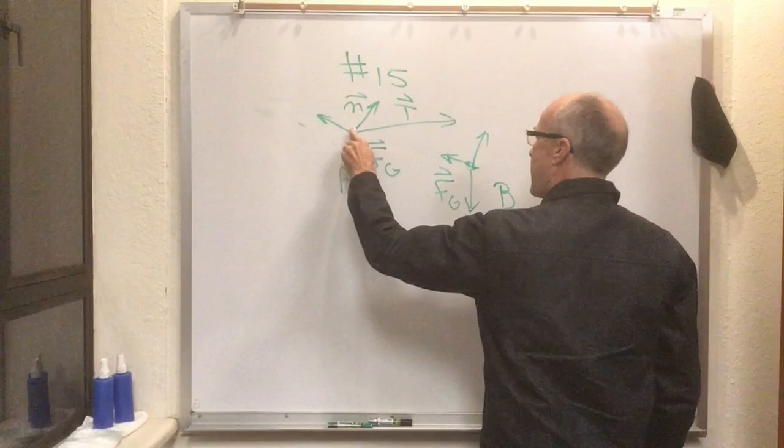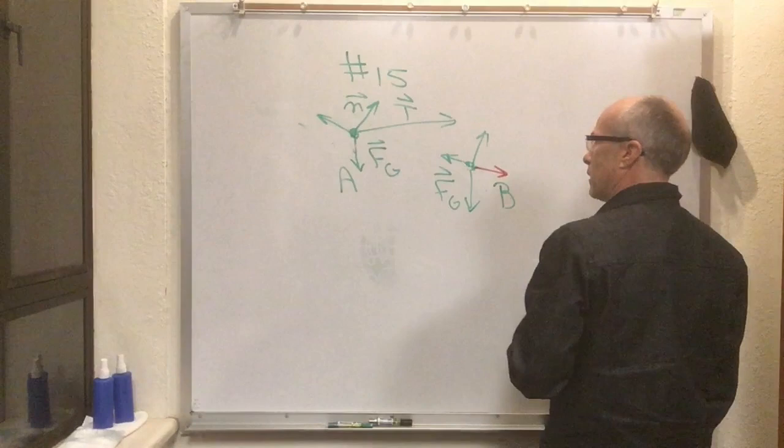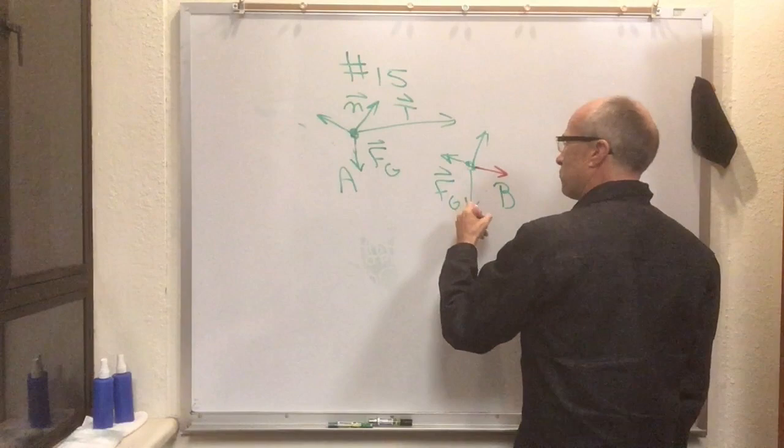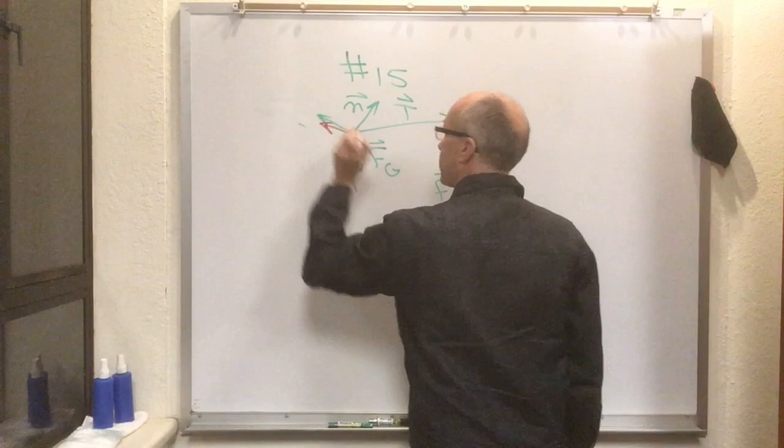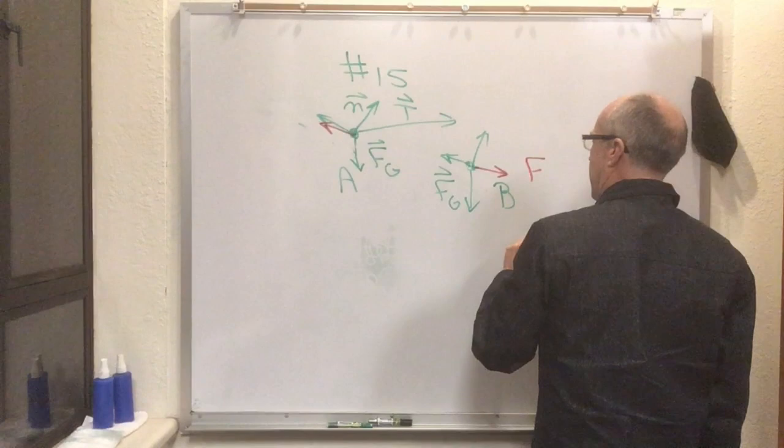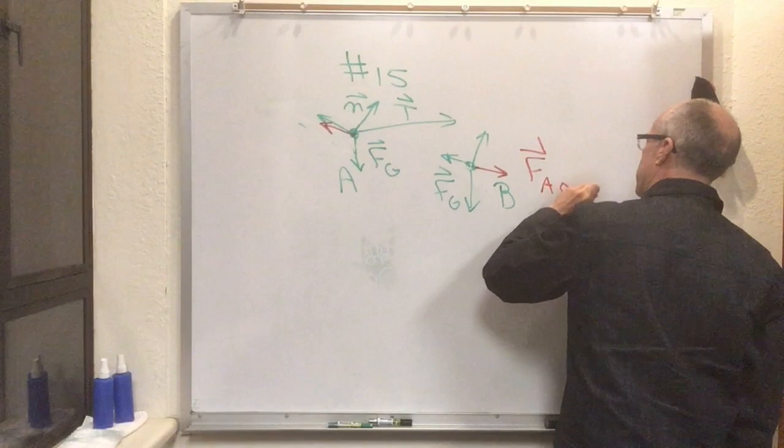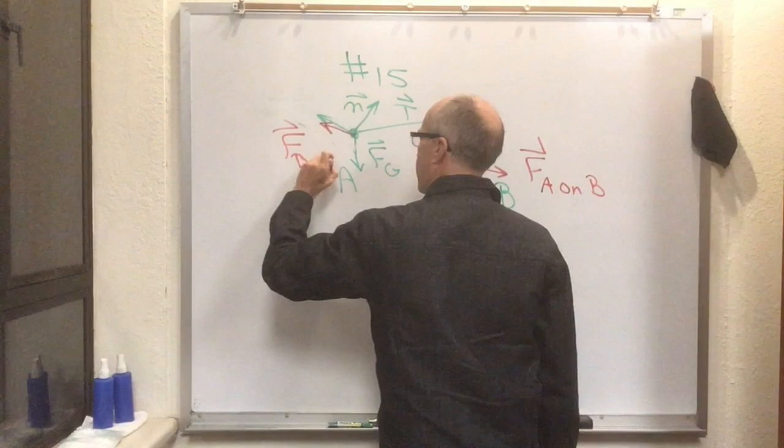And if A bumps into the back of B, now A is pushing B. And of course B, which has been bumped into, is kind of pushing back on A. So we're going to have a force back in that direction, and we label this the force of A on B, and we label this the force of B on A.